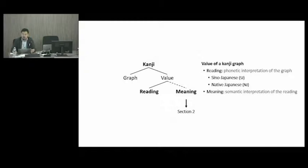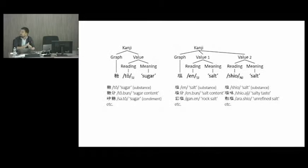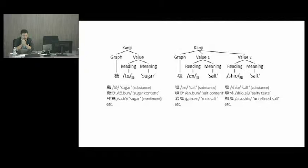Before we proceed, I need to say something about the reading. Because the graphs and their values were historically imported from Chinese and adapted into Japanese, most graphs have two types of readings. The first is referred to as Sino-Japanese, or SJ, and the other is native Japanese, NJ. For example, on the left-hand side we have a particular graph which is read as to and means sugar. This graph can be used by itself to write the word to, or in combination with other graphs such as toubun (sugar content) or sato (sugar as a condiment).